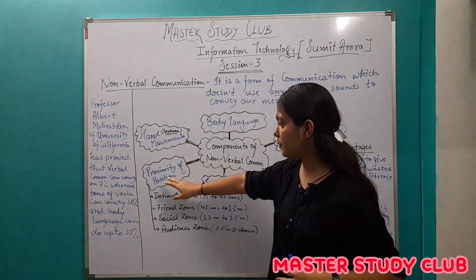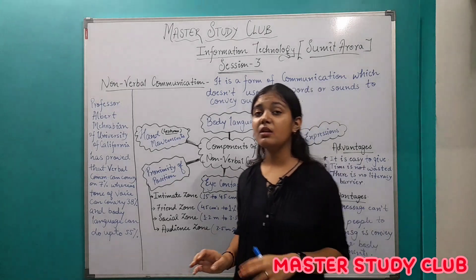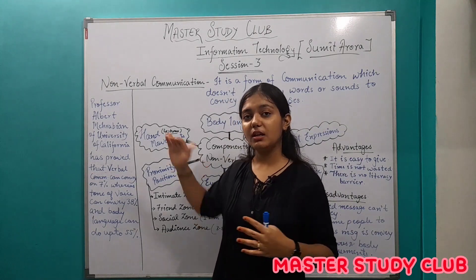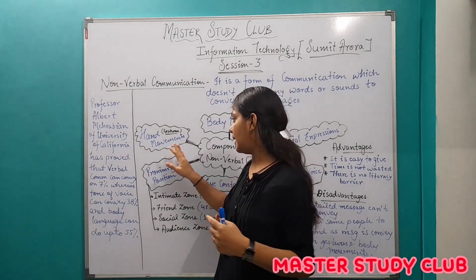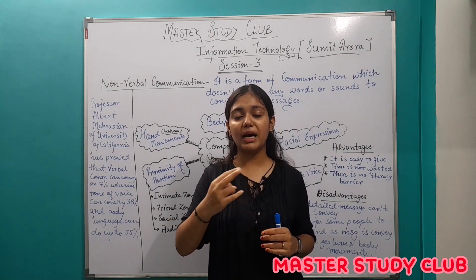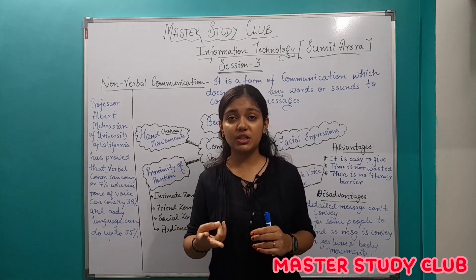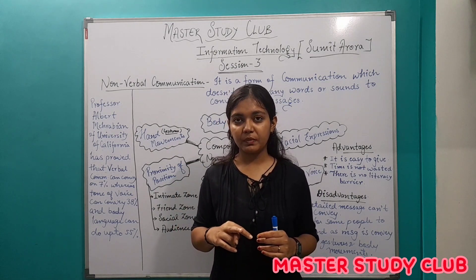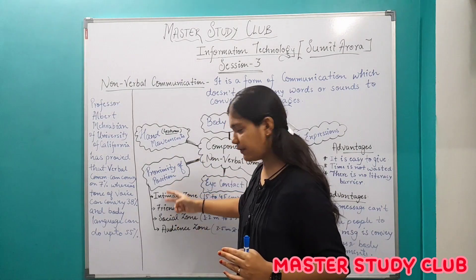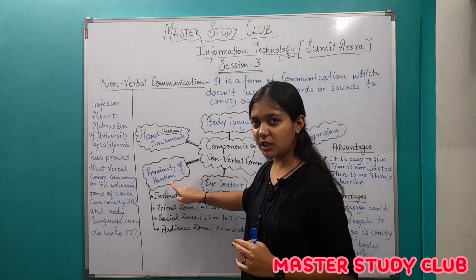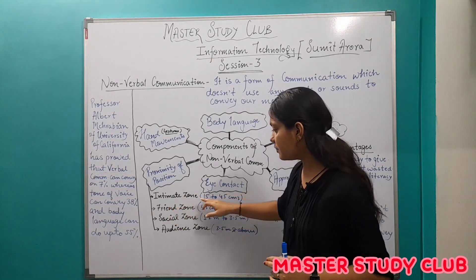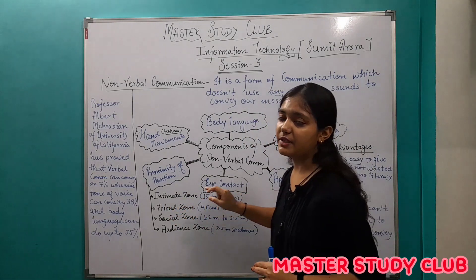The fourth component is proximity of position — the distance between the two parties communicating. Proximity of position has four phases or zones. The first is the intimate zone, which is 15 cm to 45 cm. Who falls in the intimate zone? Parents, close friends, and partners — people who are close to you and where closeness is socially acceptable.